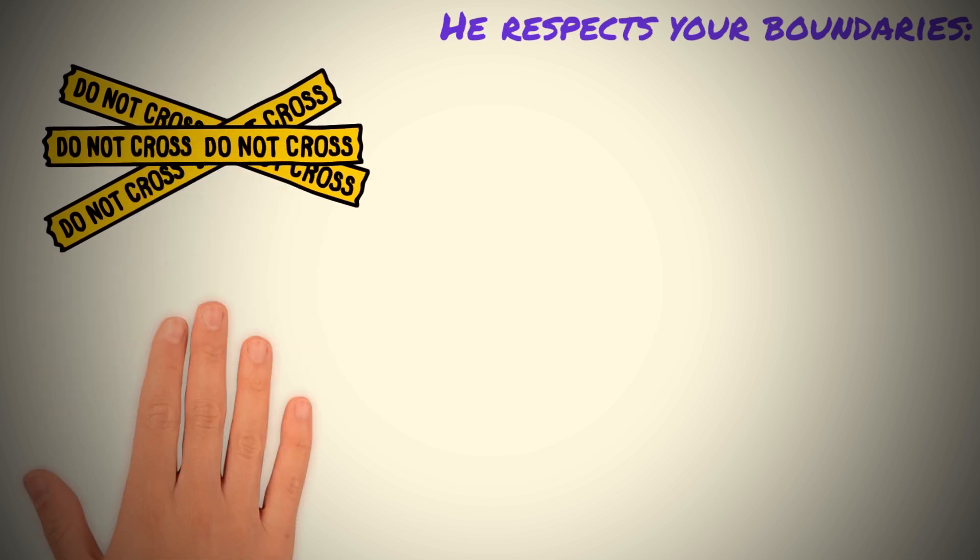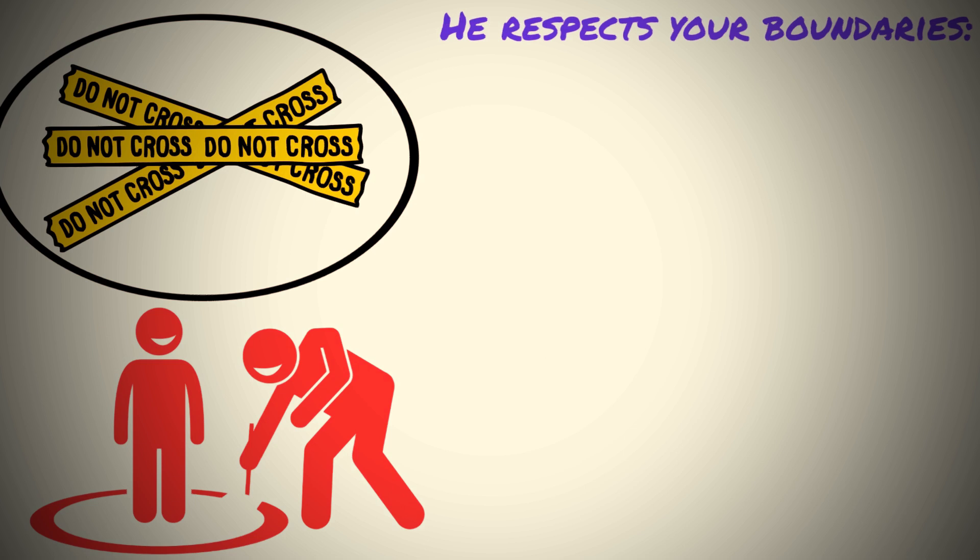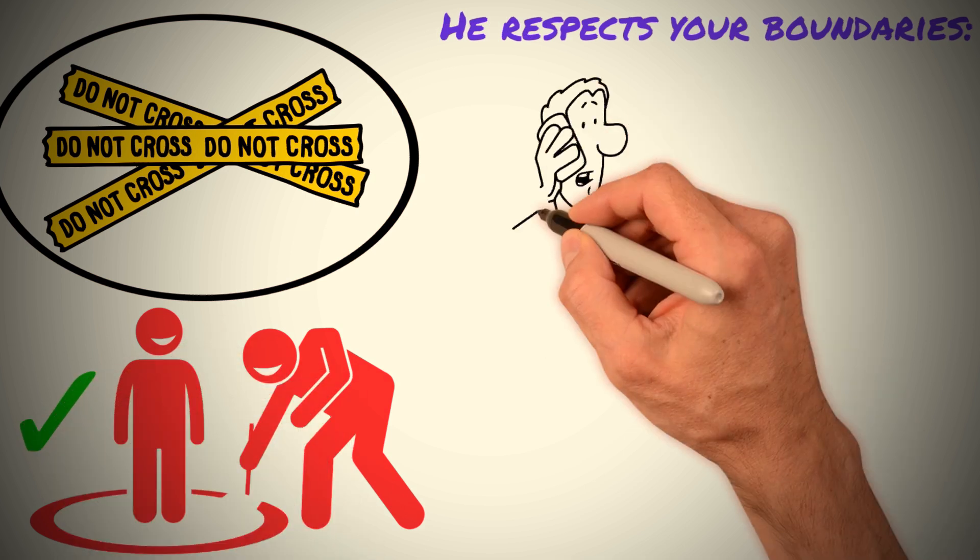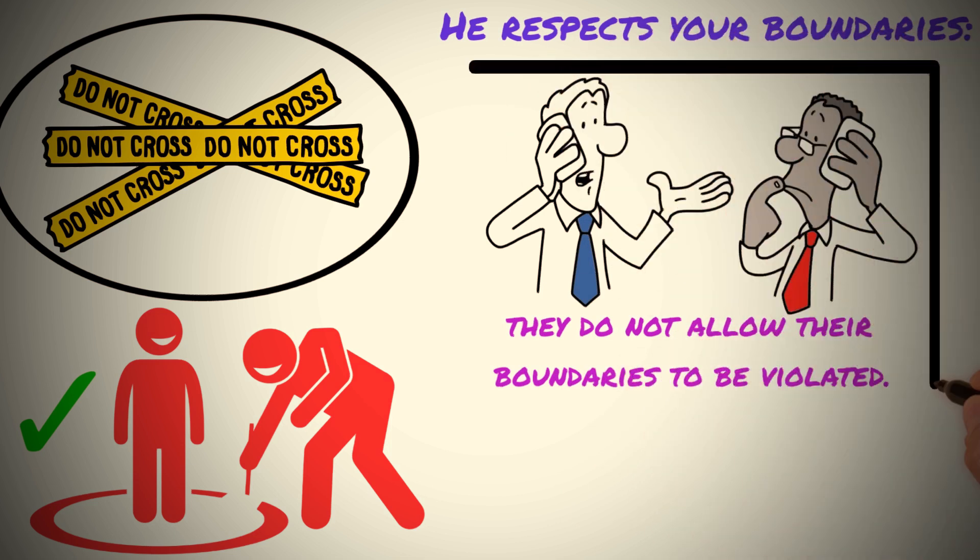He respects your boundaries. Sigma males understand that personal boundaries are important for everyone, and they show respect for others by honoring those boundaries. This means that they do not try to push others to reveal more than they are comfortable with, and they do not allow their boundaries to be violated.